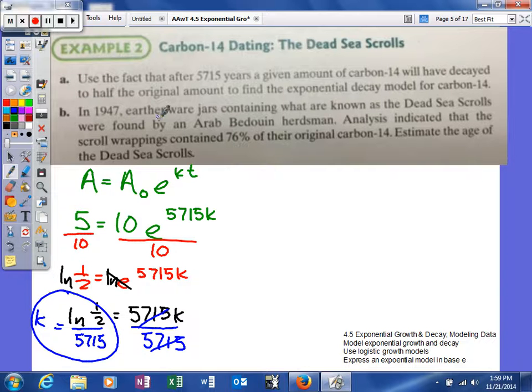Now it says in 1947, earthenware jars contained what are known as the Dead Sea Scrolls. They were found by an Arab herdsman. Analysis indicated that the scroll wrappings contained 76% of the original carbon-14. Estimate the age of the Dead Sea Scrolls. So we're going to see if we can't use this k right here and help us with our problem.